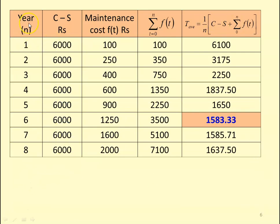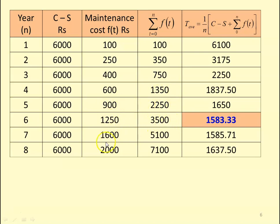We prepare the table. Years 1 to 8; C − S = 6000 (constant, since C = 6100 and S = 100). Maintenance costs as given: 100, 250, 400, 600, 900, 1250, 1600, 2000. The cumulative maintenance cost Σf(t): Year 1 — 100; Year 2 — 350; Year 3 — 750; Year 4 — 1350; Year 5 — 2250; Year 6 — 3500; Year 7 — 5100; Year 8 — 7100.